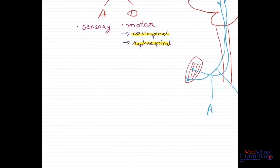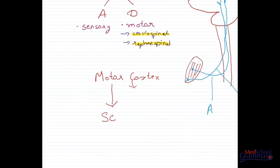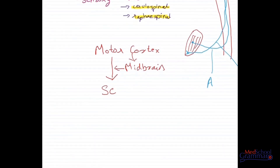Now let us take a look at an overview of the path of the Descending Tracks. Descending Tracks originate in the brain — specifically in the motor cortex. After originating in the motor cortex, they have two pathways: they either go to the spinal cord directly, or they take a halt in the midbrain and then go to the spinal cord. After going to the spinal cord, they will go to the muscle fibers.